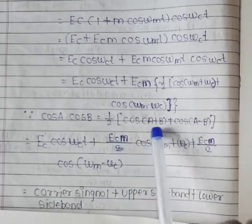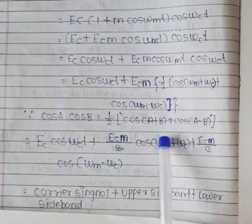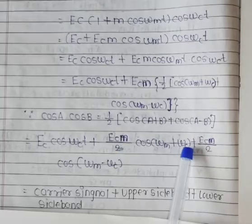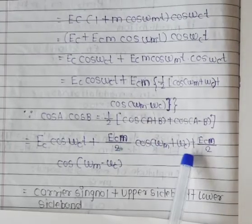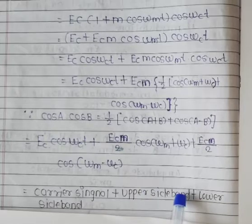The second term is the upper sideband. What is the frequency? This is f_c + f_m, which is the upper sideband.